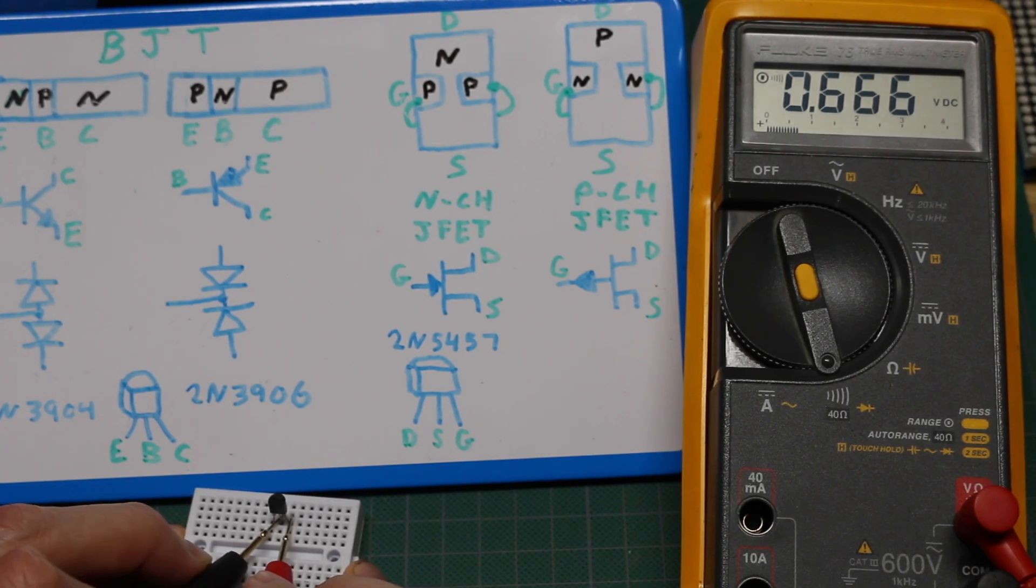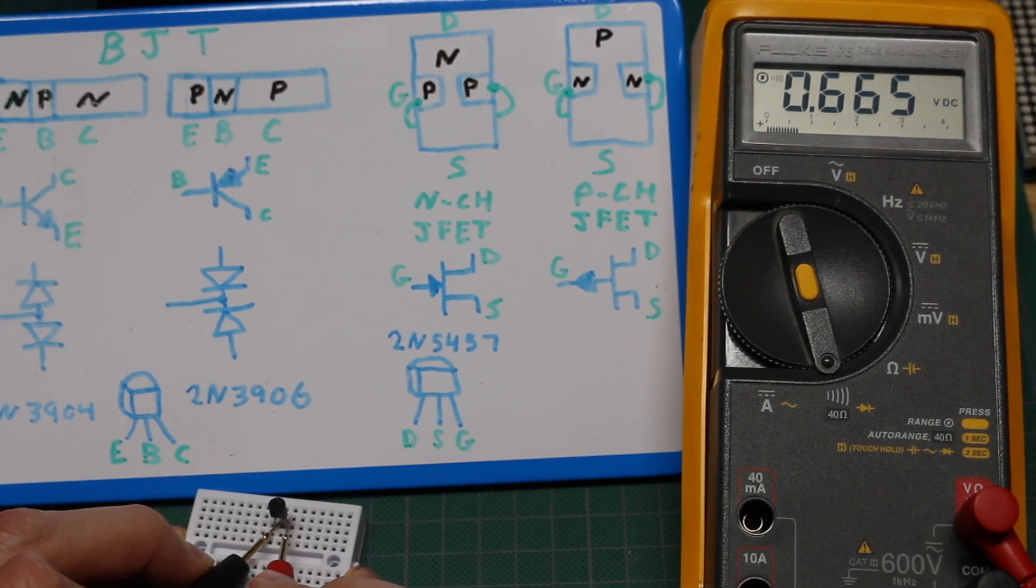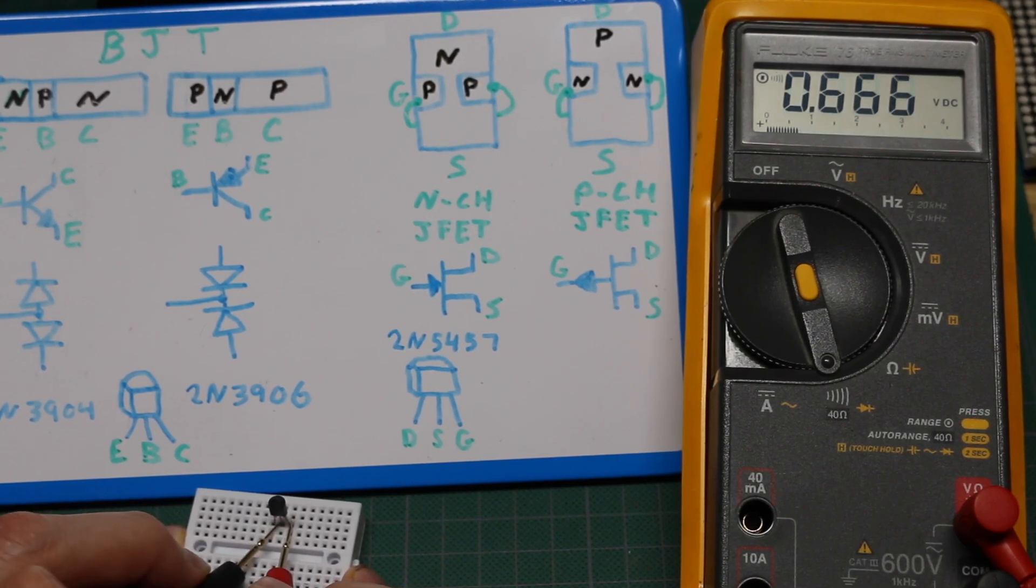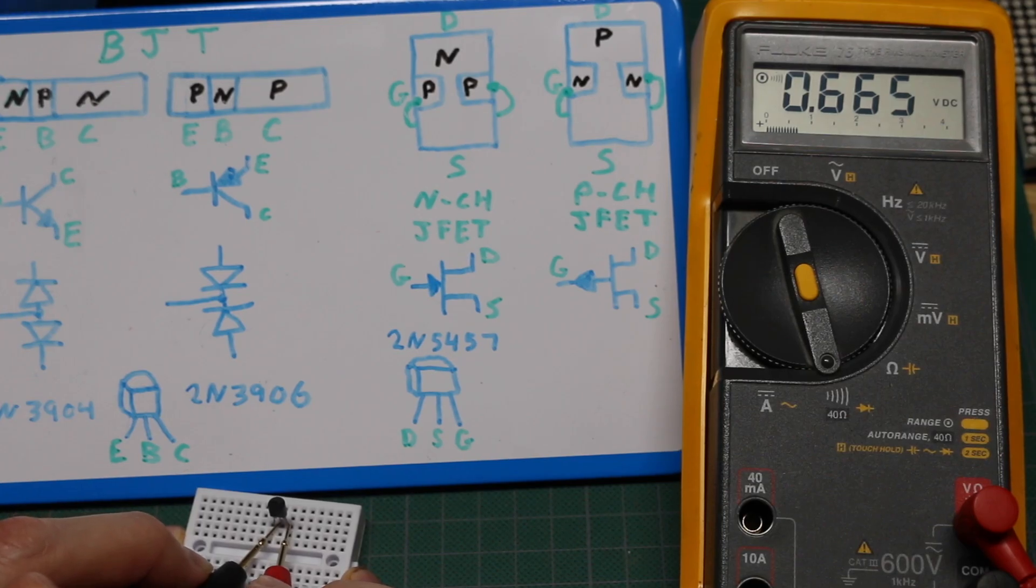So with this PN junction, with positive on the rightmost pin, we have already tested negative on the first pin and there was nothing. So that indicates that the center pin is most likely the base.